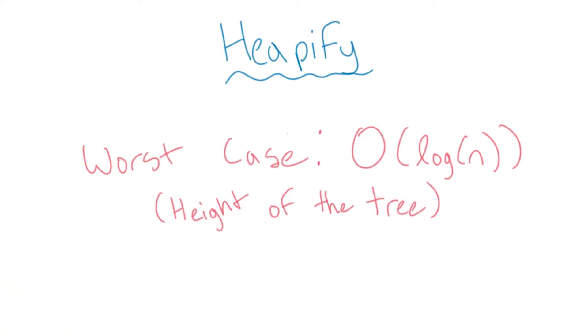The runtime of insert and delete, a more general case of extract, ends up being O(log n) in the worst case. Ultimately, the worst case would involve moving an element all the way up or down the tree, and would roughly be as many operations as the height of the tree.